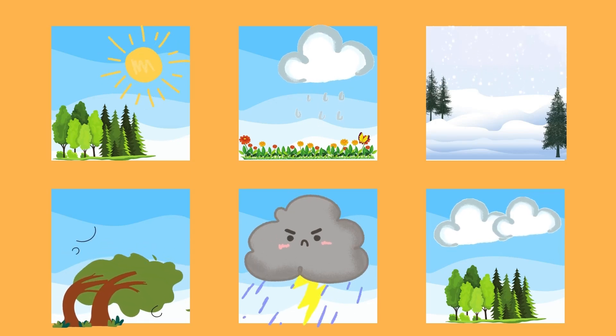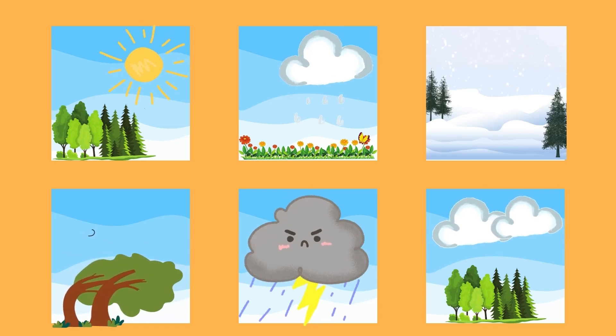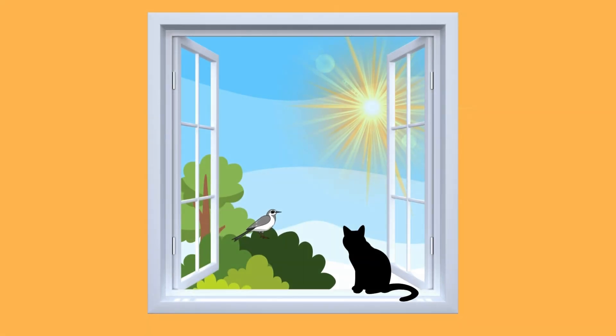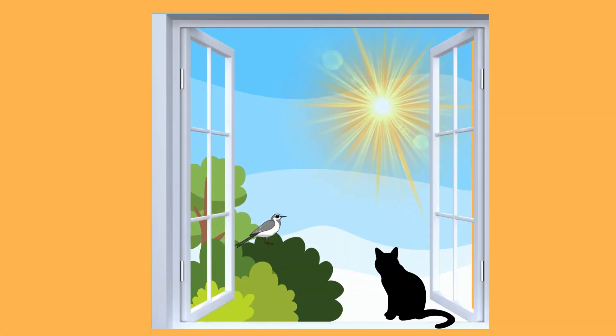Hi there! I am going to teach you about the types of weather. What do you see outside the window? That's right, it's the sun. When we can see the sun, we say it's sunny.